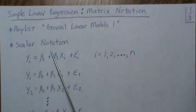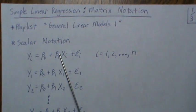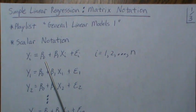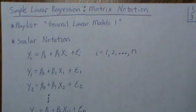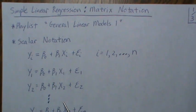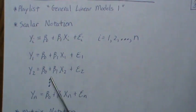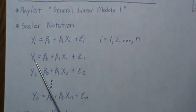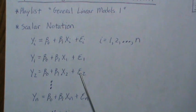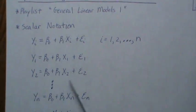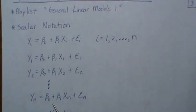First of all, scalar notation — that's what I've been using so far. We just say yi is equal to beta 0 plus beta 1 xi plus epsilon i, for i equal 1 to n. What this really means is that for each person or each observation, they get their own equation. So observation 1 is y1, y2 has x2 and epsilon 2, all the way to yn equals beta 0 plus beta 1 xn plus epsilon n.